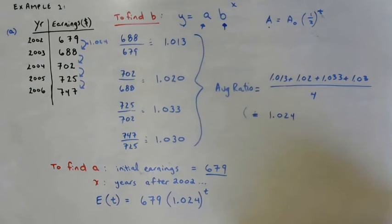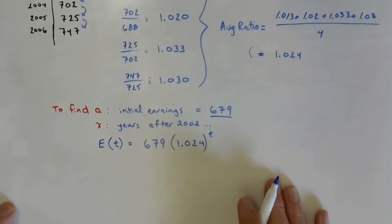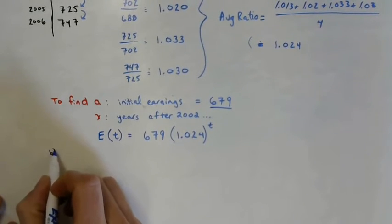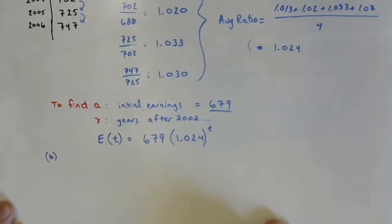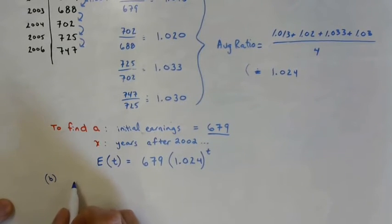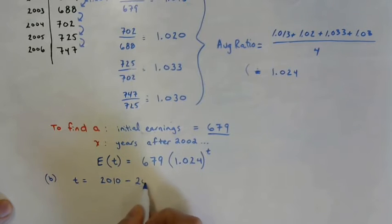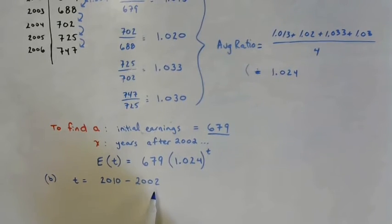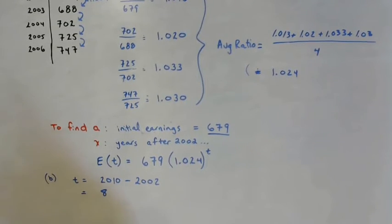Part B of that problem says, predict the average Canadian's weekly earning in 2010. So 2010 is not part of our chart. So we need to figure out which year after 2002 is 2010. So in order to figure out what T is for that situation, we're just going to take our 2010 and subtract 2002. The difference between 2010 and 2002 will be the number of years past since 2002. The number of years past since 2002 will get us to 2010. And that's going to be eight years.